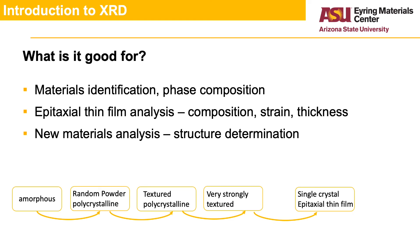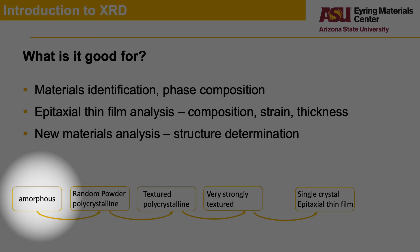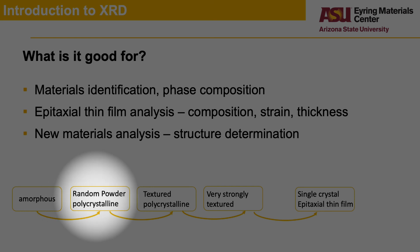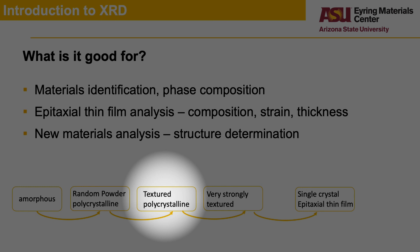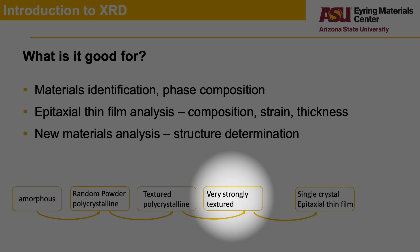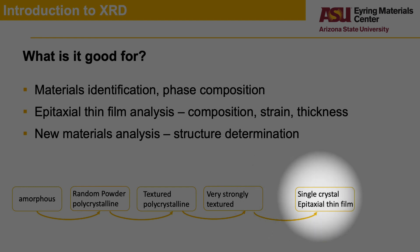A second application is the analysis of epitaxial thin films. Epitaxial thin films are single crystal thin films grown on a single crystal wafer. From the data, we can determine the composition, strain, and thickness of the film. A third analysis is key to the analysis of a new single crystal material, used to determine their structure. The diagram is a representation of the type of samples one would work with, going from non-crystalline amorphous material such as window glass, where we can only provide extremely limited information, moving to a random powder of crystalline phases, which is the bulk of the use of XRD. As the crystal grows, less orientations are present and the samples give rise to texture, also known as preferred orientation. This can move to a single crystal when the domains merge together and are connected.